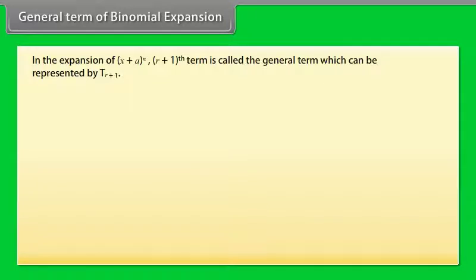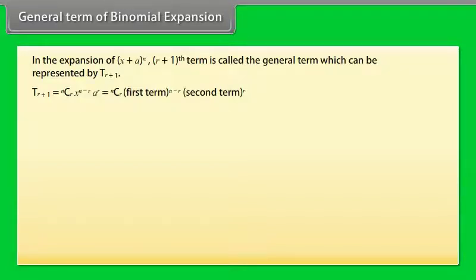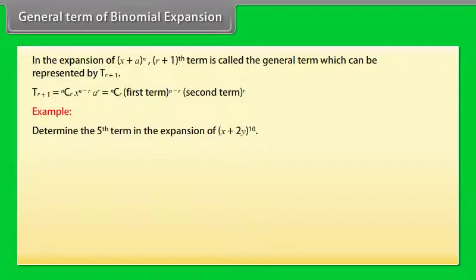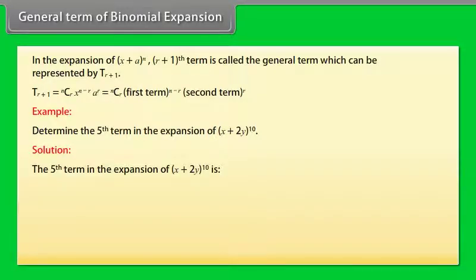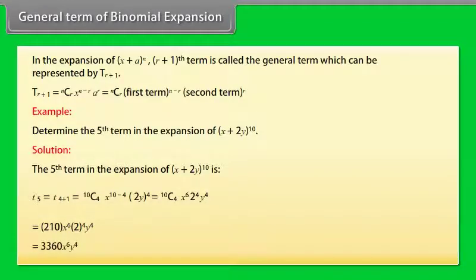General term of binomial expansion. In the expansion of (x plus a) raised to power n, the (r+1)th term is called the general term, represented by t(r+1). t(r+1) equals nCr into x raised to power n minus r into a raised to power r, which equals nCr times the first term raised to power n minus r times the second term raised to power r. Example: Determine the 5th term in the expansion of (x plus 2y) raised to power 10. The 5th term gives 10C4 times x raised to power 6 times y raised to power 4.